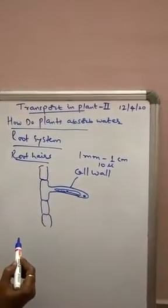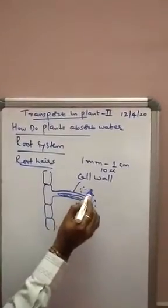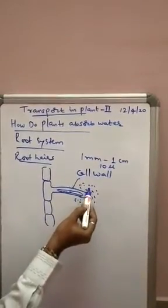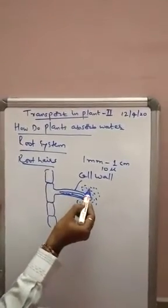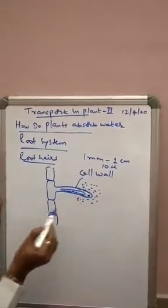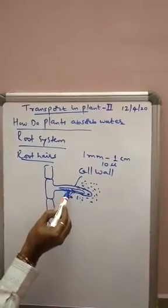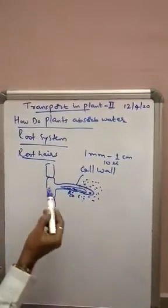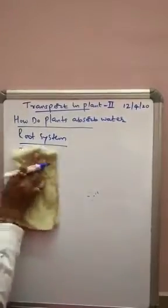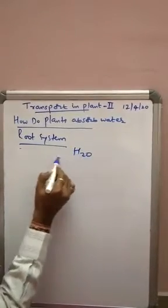Root hairs are short-lived structures, so many transplanted seedlings cannot survive due to damage to these root hairs. Surrounding the root hair is capillary water, which is the readily absorbable form of water. Initially there will be diffusion, then on the surface imbibition, and finally through osmosis water can enter into the root hair. This water then has to reach the outer and inner cortical cells and finally the xylem of the root. There are mainly two pathways by which water can reach the xylem of the root.